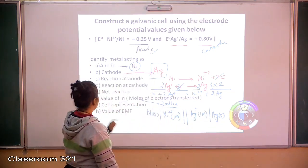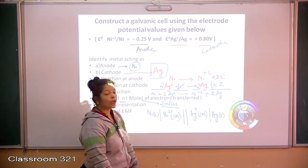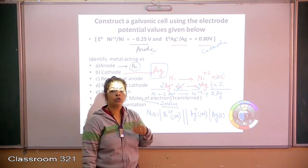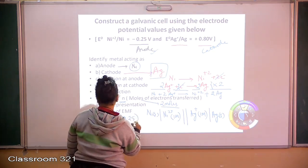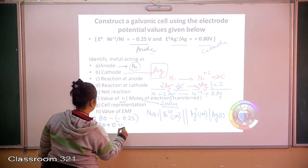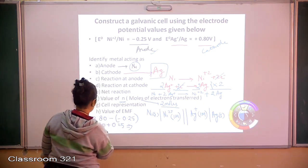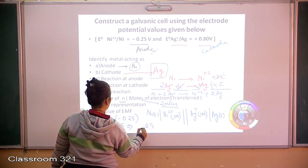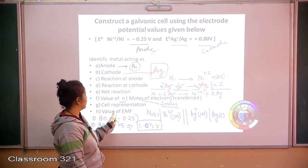To calculate the EMF value, the formula is E°right minus E°left, where right means cathode. So the value is 0.80 minus E° of the left which is the anodic side, the value is minus 0.25. This ultimately becomes 0.80 plus 0.25, giving a final answer of 1.05 volts. That is the EMF of this particular cell.